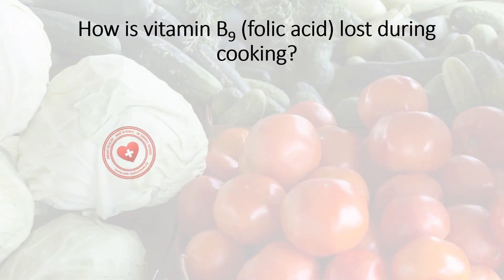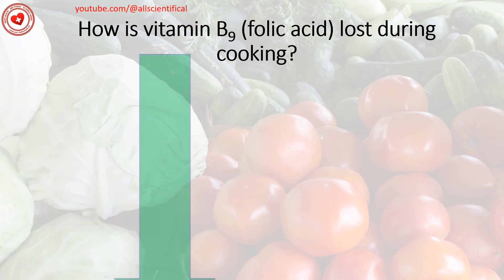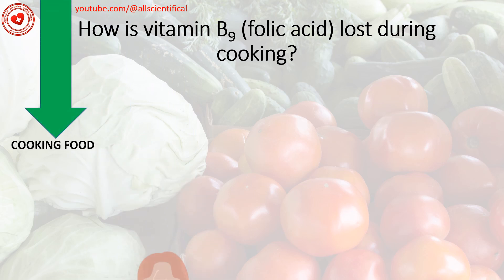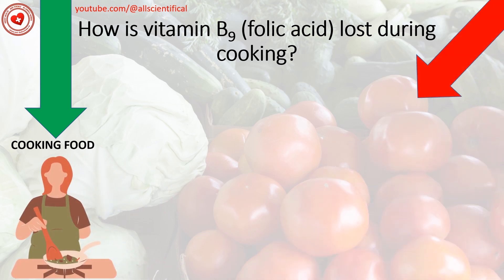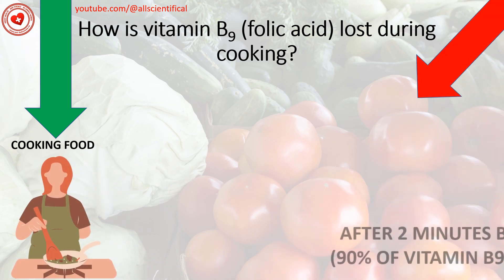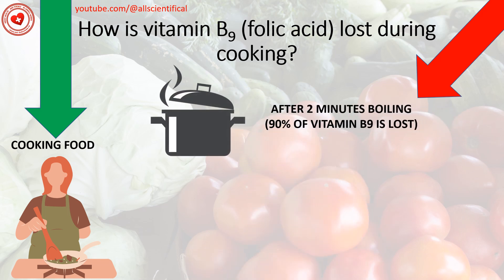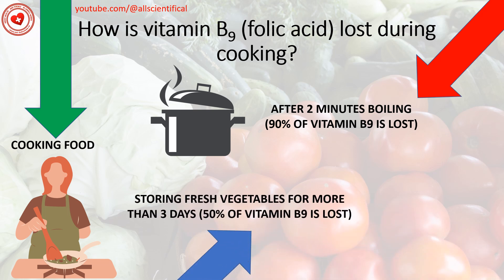How is vitamin B9 folic acid lost through cooking? Folic acid is very quickly destroyed under the influence of various factors. When cooking, a large amount of this substance is lost. When fresh vegetables are stored for more than 3 days, 50% of vitamin B9 is lost. After 2 minutes of boiling, 90% of vitamin B9 is lost.